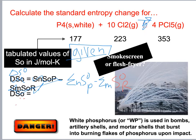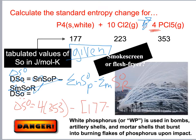Delta S naught equals 4 times 353 minus 177, minus 10 times 223.